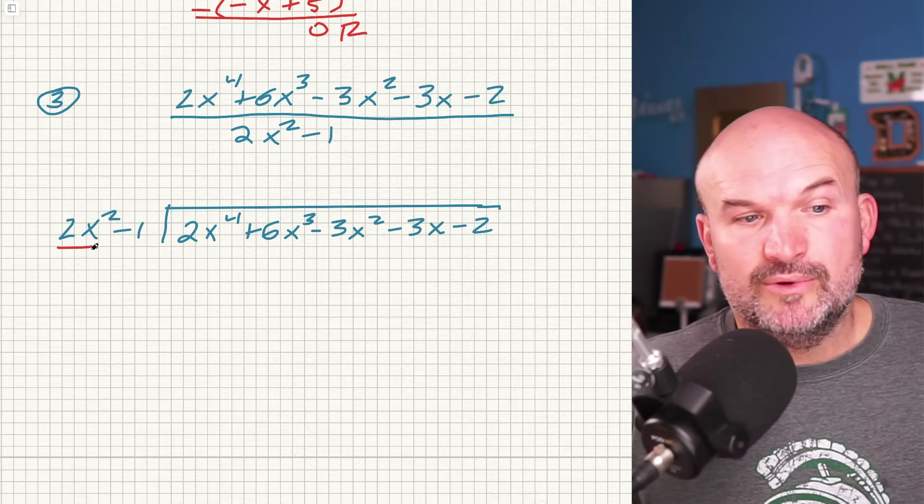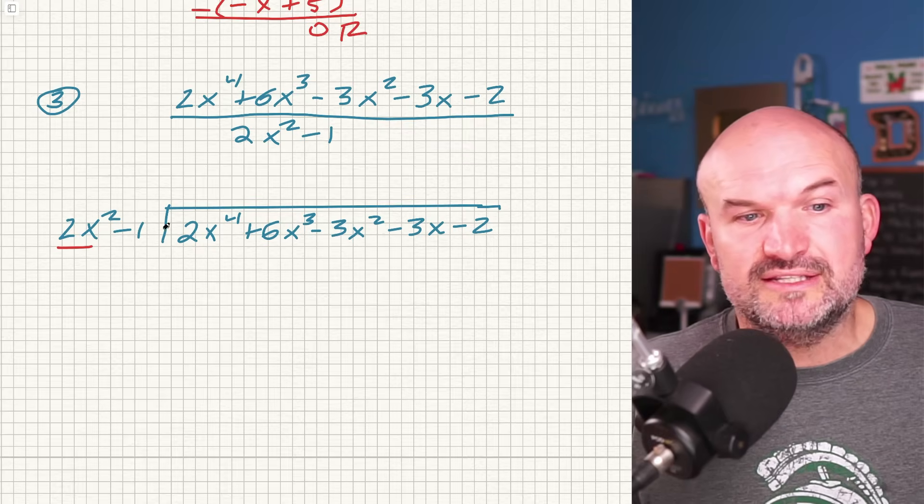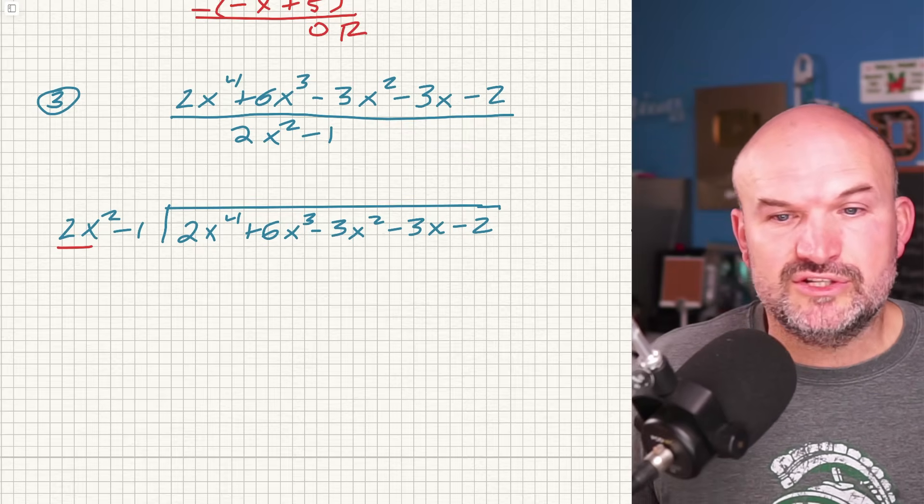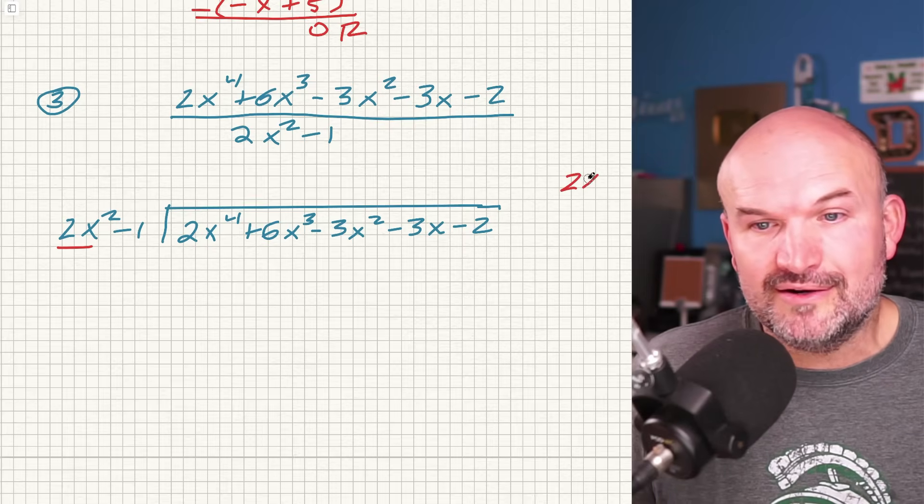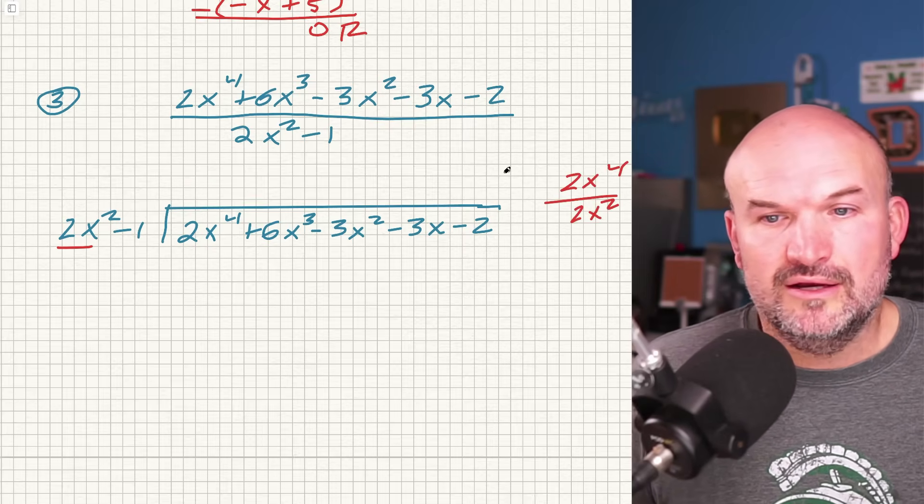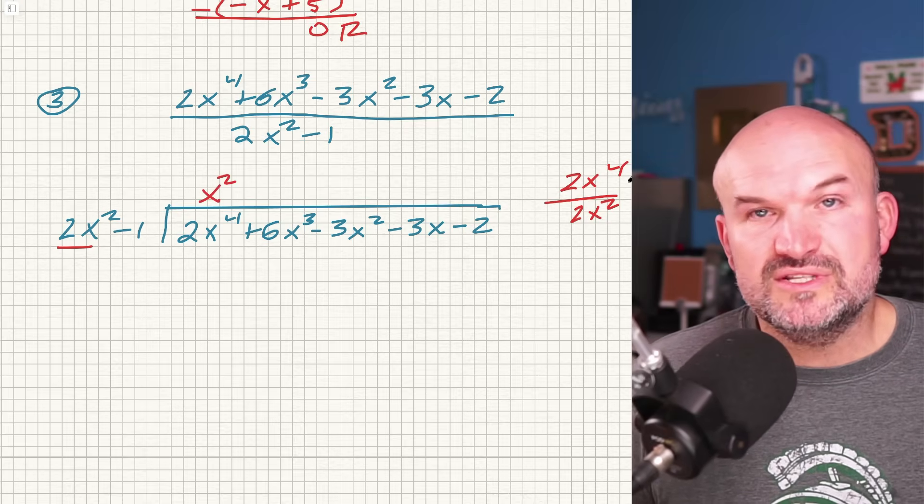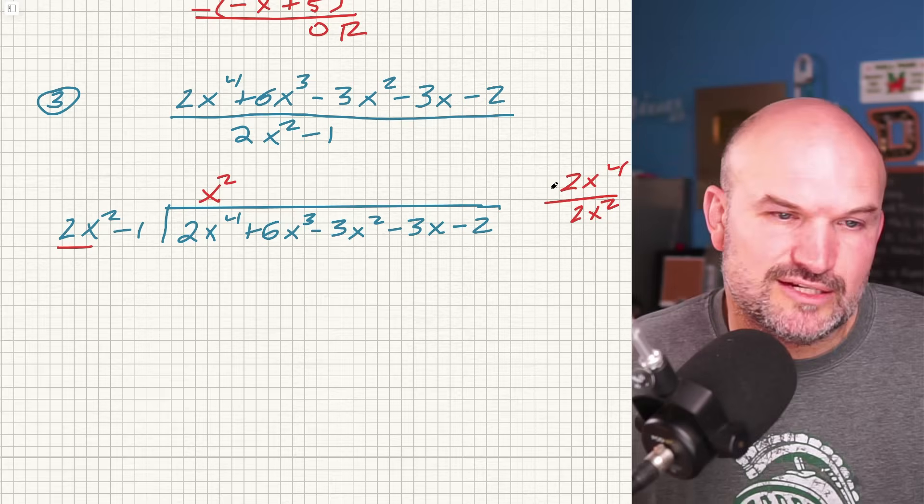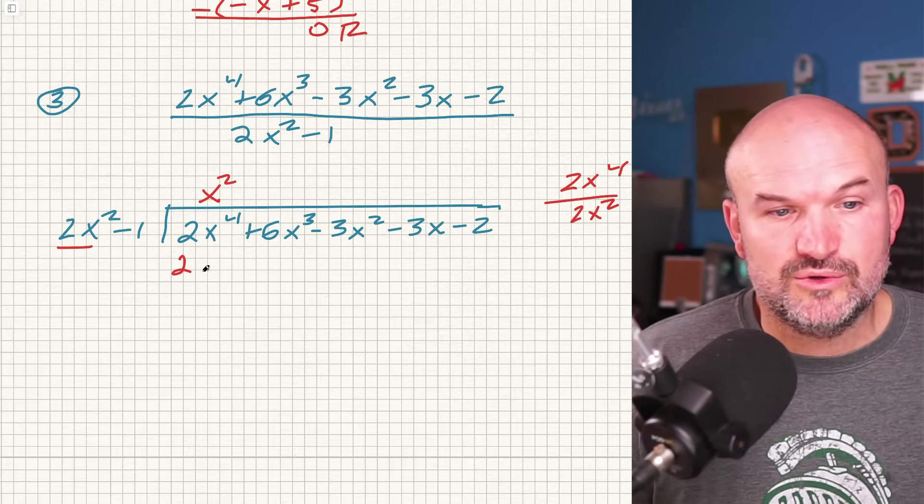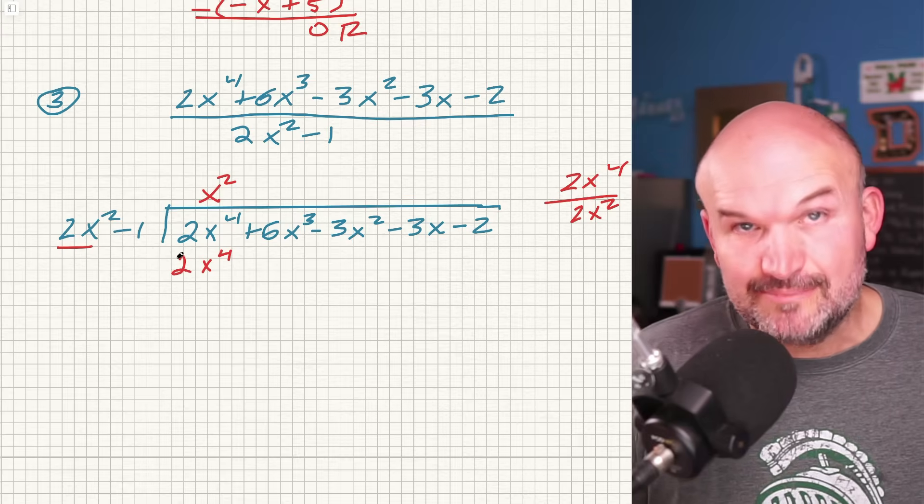So again, just like in the last example, we always take our first term and we always divide that into the first term of your dividend. So 2x squared divides into 2x to the fourth. I'm just going to write it out here because this is like one of the common mistakes students get. What is this going to be? That's just an x squared, right? Two's divide out, x to the fourth divided by x squared is x squared.